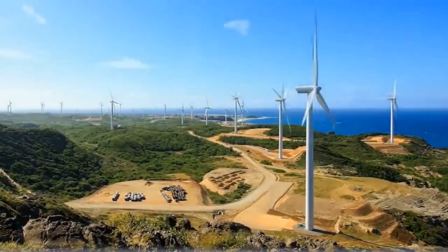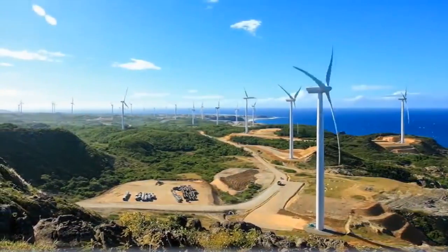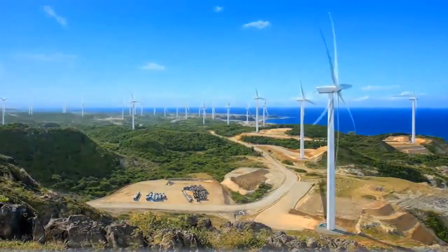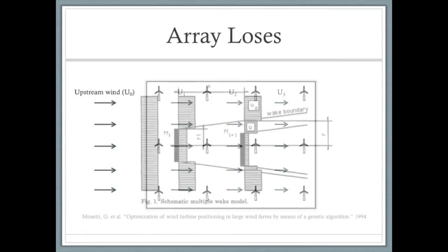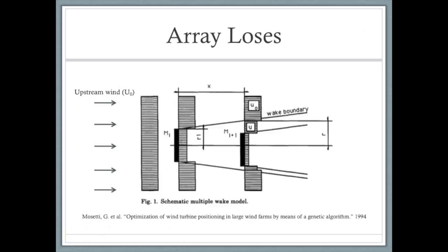Because wind farms require specific conditions, it is imperative that the farms use their space as efficiently as possible. As wind passes through a turbine, wake effects decrease the wind velocity downstream. These array losses lead to less power produced by the downstream turbines.